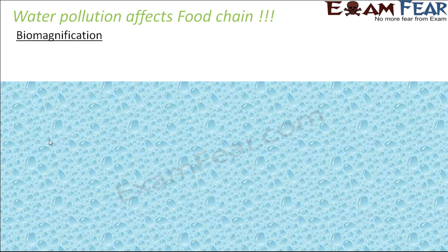It is very obvious. If the water is polluted, the aquatic organisms living in that water will be taking in the polluted water, so their body also contains the poison in some form. When those aquatic organisms are eaten by some other organism — for example, if human beings consume a fish which has poison within it — the human beings will also have the poison in their body. And if human beings are eaten by a lion or tiger, they will also get the same poison. That is how water pollution can impact the food chain.